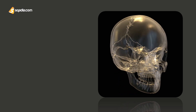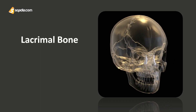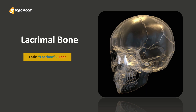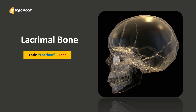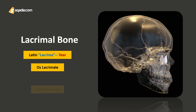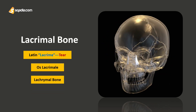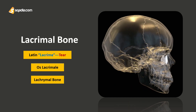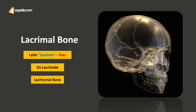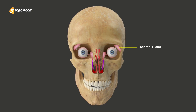First things first, if we dissect the name, the word 'lacrima' is Latin for tears. This bone is also called os lacrimale, or sometimes differently spelled as lacrimal bone with a Y. This bone is called lacrimal, or related to tears, because it is closely related with the nearby lacrimal structures, or the tear gland structures.